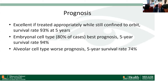The prognosis is excellent if the tumor is treated while still confined to the orbit — survival rate is over 93 percent at five years. The embryonal subtype has the best survival rate, comprising about 80 percent of cases with a five-year survival rate of about 94 percent. The alveolar subtype has a worse prognosis with a five-year survival rate of about 74 percent.